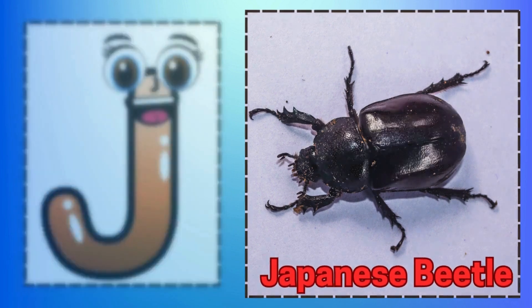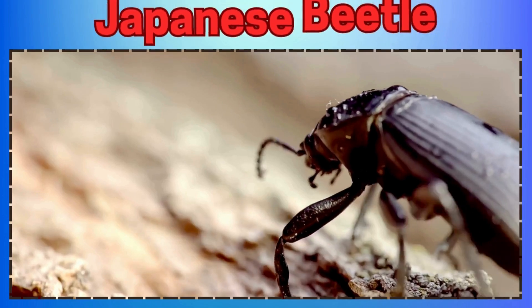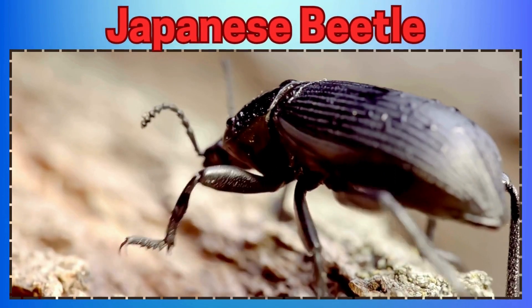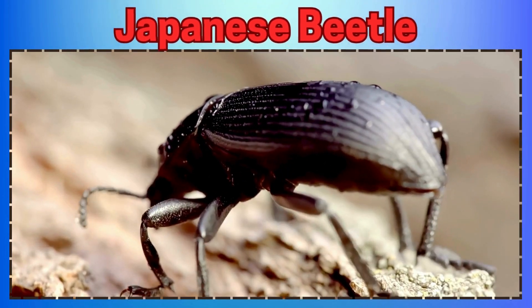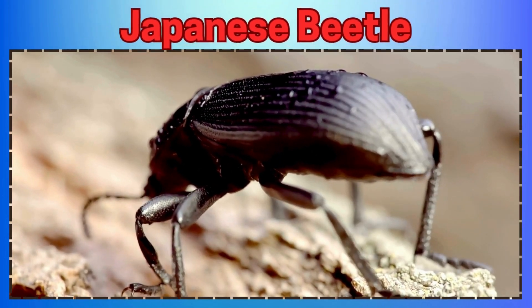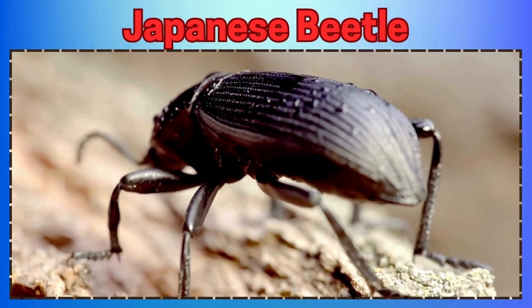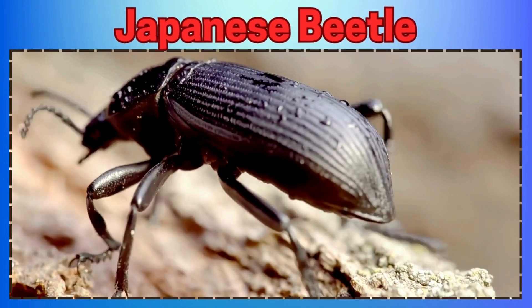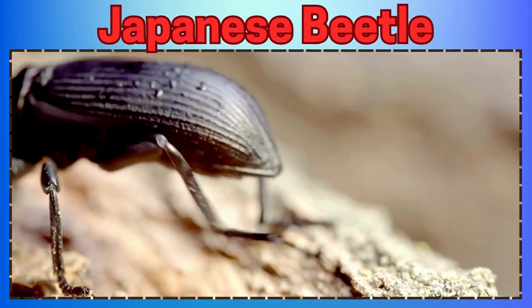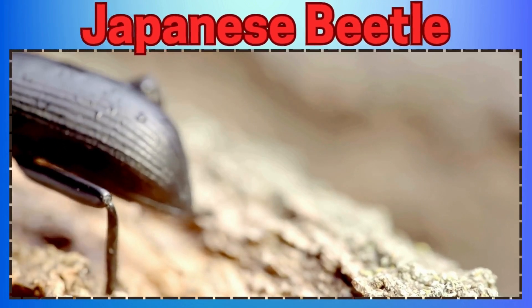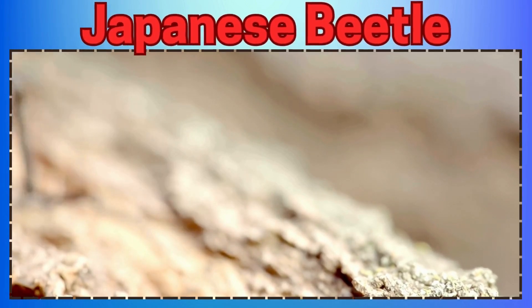S is for Stick Insect Looking like a Twig. T is for Termite Building Homes so Big. U is for Underwing Moth Hiding in Trees.